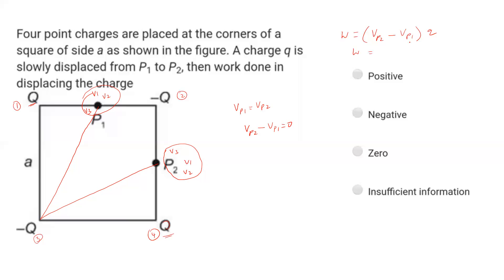Since the potential difference is equal to zero, the work done is also zero. The distances from all charges to P1 and P2 are equal — both equal to A — confirming equal potentials at both points. So the correct answer is zero.